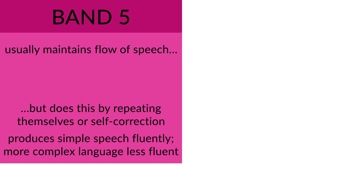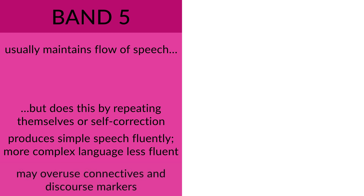The best way to get above band 5 is to have a wide vocabulary, which means a better level of general English. Something else band 5 candidates typically do is overuse connectives and discourse markers — another phrase for cohesive devices. They use too many of them, maybe one in every single sentence. So try not to overuse connectives.